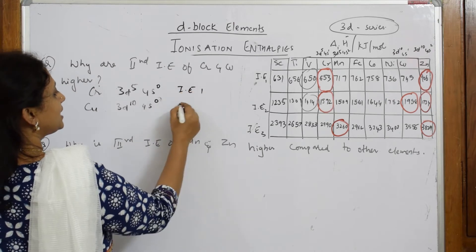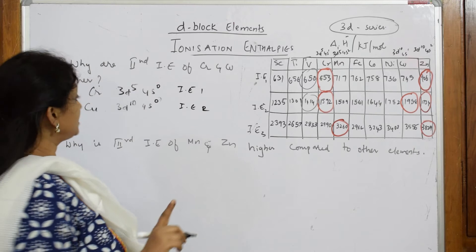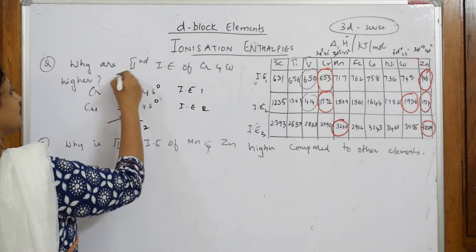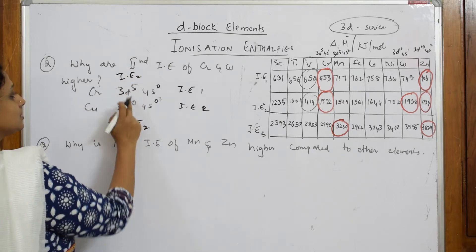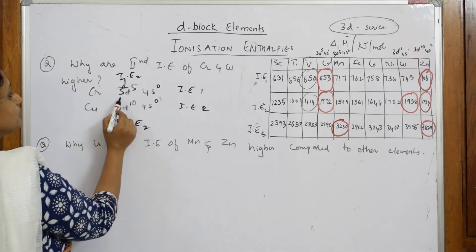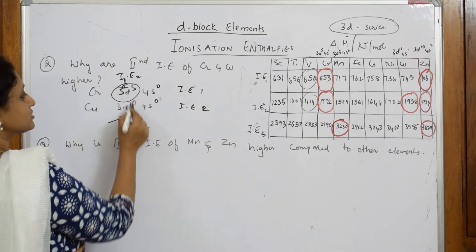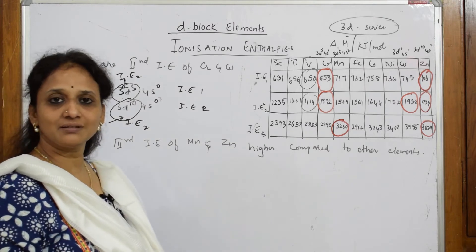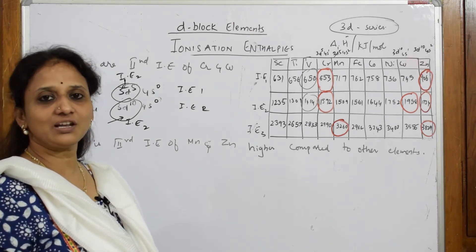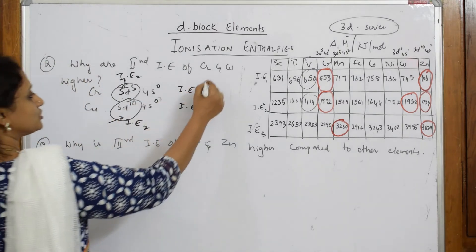When I have to apply the second ionization enthalpy, observe I have to remove this electron. Now second ionization enthalpy when I remove this is half filled, and this half filled and this full filled configuration is most highly stable. When it is highly stable, automatically the ionization enthalpy values will become more. So that is the concept.